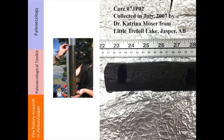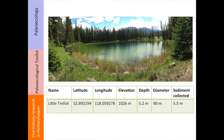Now I want to talk about some of the actual results that we've been finding. This is from Emma's work. The lake I'm going to focus on is Little Trefoil Lake, located very close to Jasper Park Lodge — just a stone's throw away from the actual lodge. The core was collected by Katrina in July of 2007 and really hasn't had much done to it until now. Emma has been looking at the charcoal preserved in this lake.